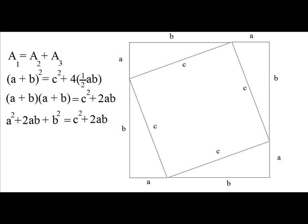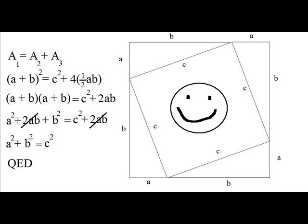We see that 2AB is present on both sides of the equation, so we can cancel them out. This leaves us with A squared plus B squared equals C squared, which is the Pythagorean Theorem. We have derived it through the use of algebra — QED.